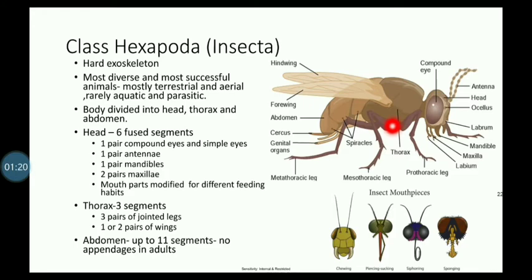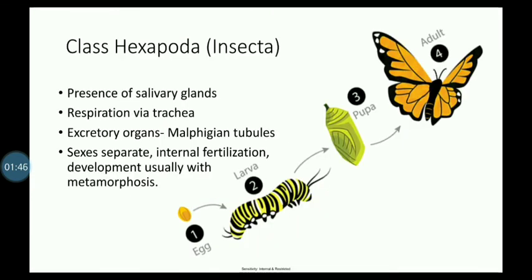In addition to the jointed legs, the thorax bears one or two pairs of wings — four wings or hindwings. The abdomen has many segments, up to 11 segments. Internally they have salivary glands; respiration is by tracheae; excretion is by Malpighian tubules. Sexes are separated, with internal fertilization, and development usually involves metamorphosis: egg, larva, pupa, adult.